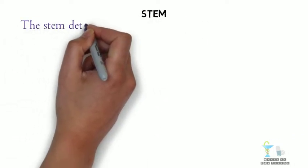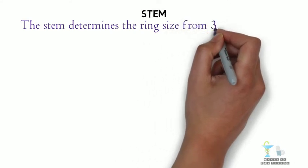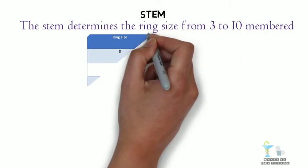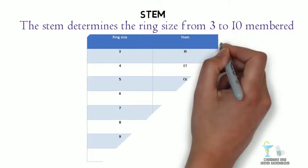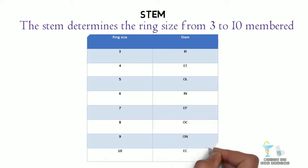Next is the stem. The stem determines the ring size from 3-membered to 10-membered ring. For this, a table must be memorized.